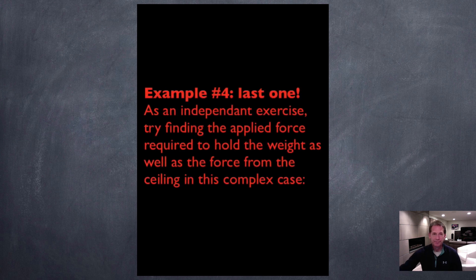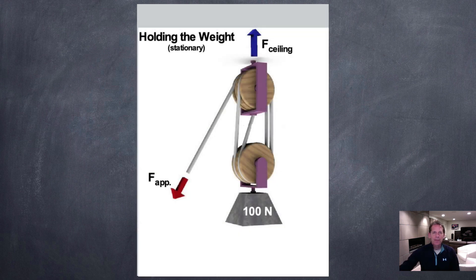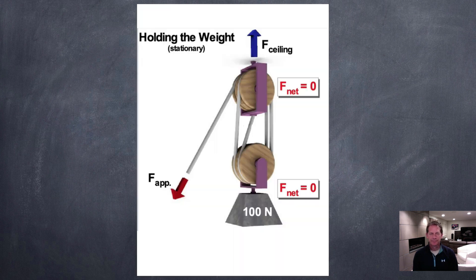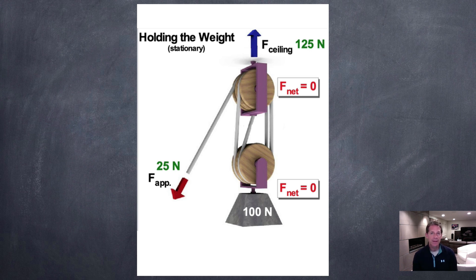Our last example: hit pause and see if you can solve it. Net force is zero — focus on just one pulley or the other and repeat the exercise. The force on the ceiling is 125 newtons and the applied force is 25 newtons.